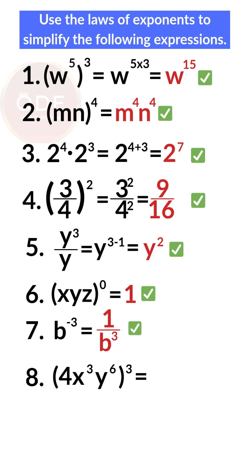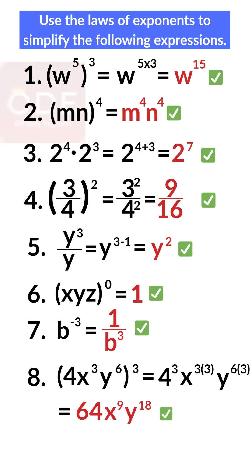Number 8: 4x to the 3rd times y to the 6th, all raised to the 3rd power, equals 4 to the 3rd power times x to the 3 times 3 times y to the 6th times 3, which equals 64 times x to the 9th times y to the 18th.